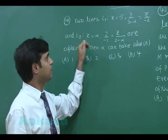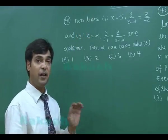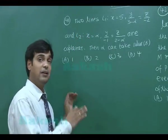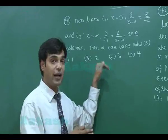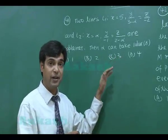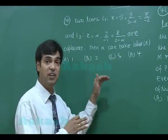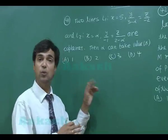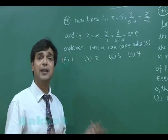Quite simple. Two lines are coplanar means the determinant formed like x2-x1, y2-y1, z2-z1 and the direction ratios a1, b1, c1, a2, b2, c2 must be zero. Simplify to get the value for alpha.